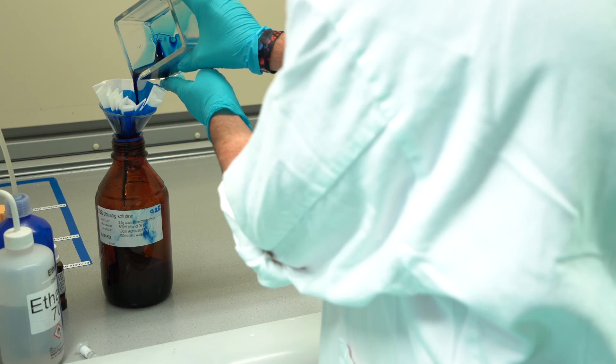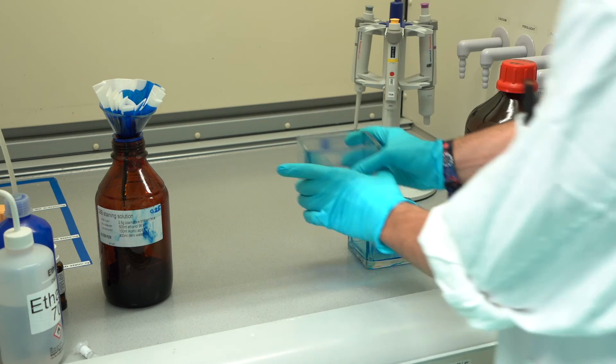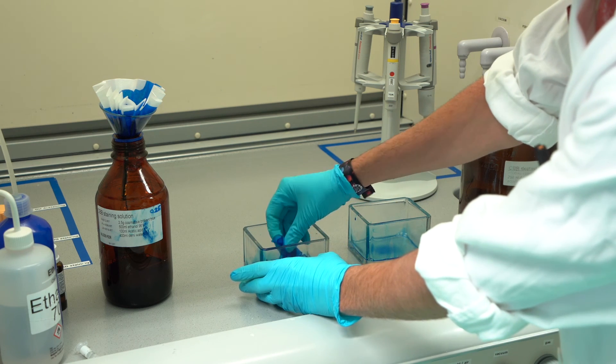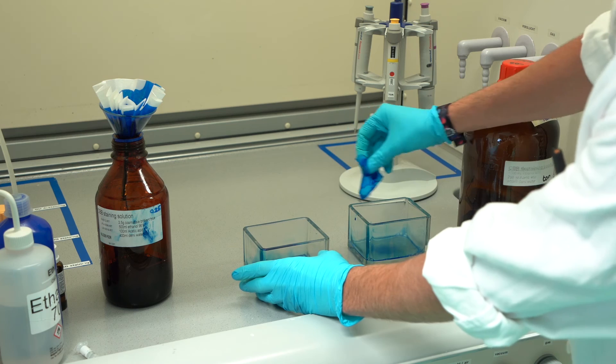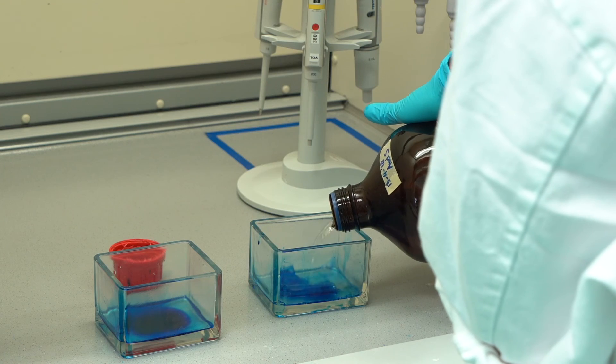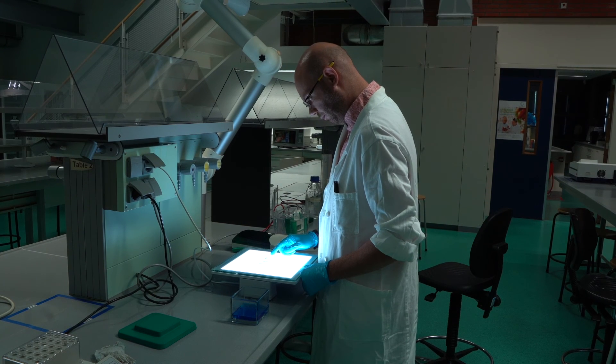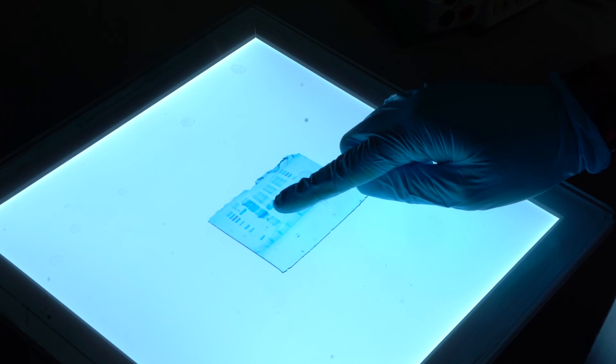Pour the excess CBB staining solution back into the bottle through a funnel with a filter. Remove the gel from the CBB staining solution and place the gel in the destain solution. Destain depending on your protocol. After this, the gel can be viewed on a lightbox.